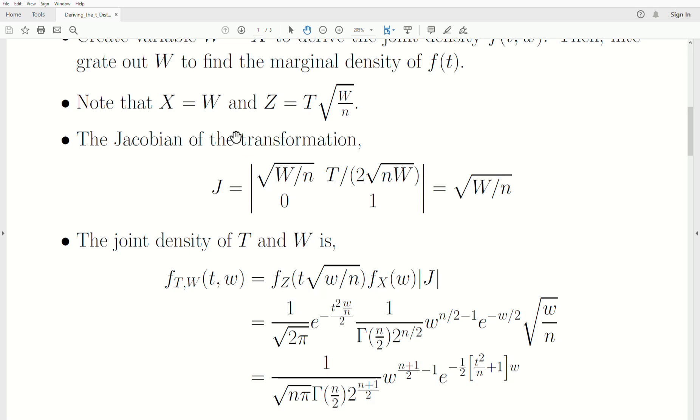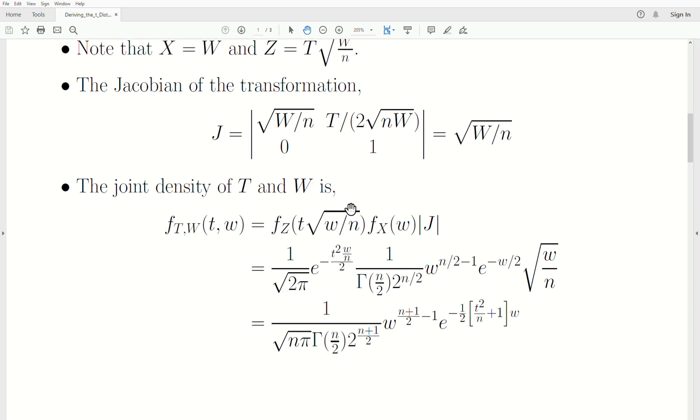Plug it into the density for the Z, plug in W for the density of X, and times the absolute value of the Jacobian. And then when we plug those values in, we get this expression here.